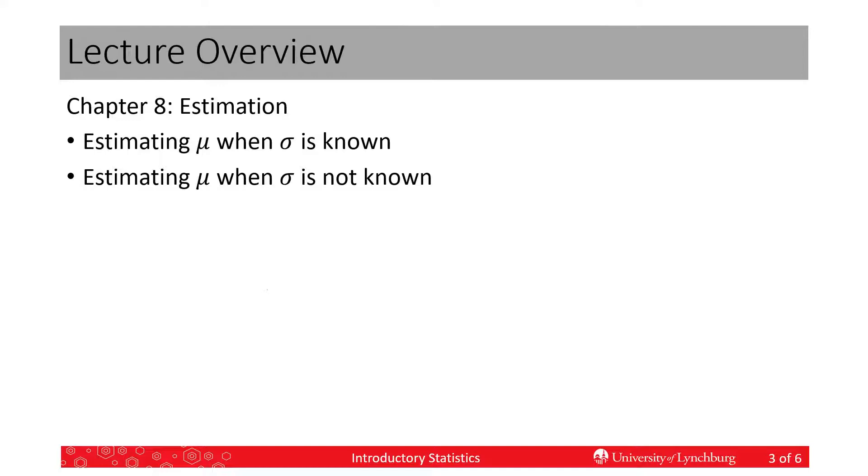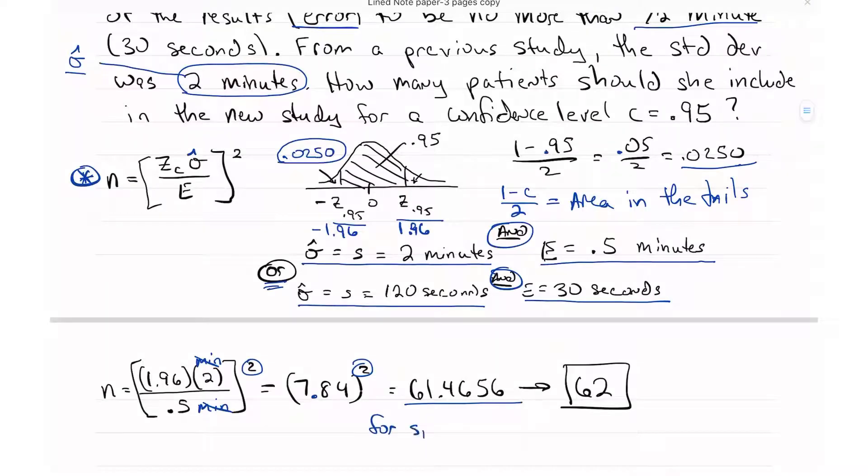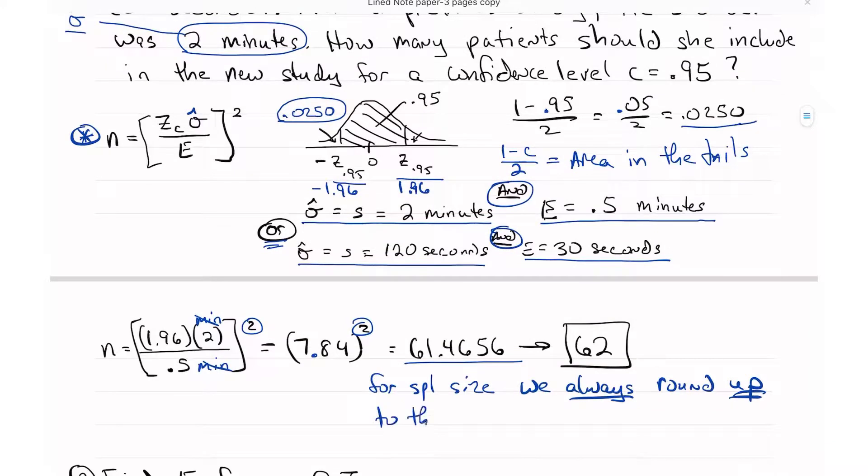For the sample size, we always round up to the next whole number always. So even though this is less than point five, we're still going to round up. It doesn't matter what this decimal is. If it were 61.0001, I would still go up to the next whole number.